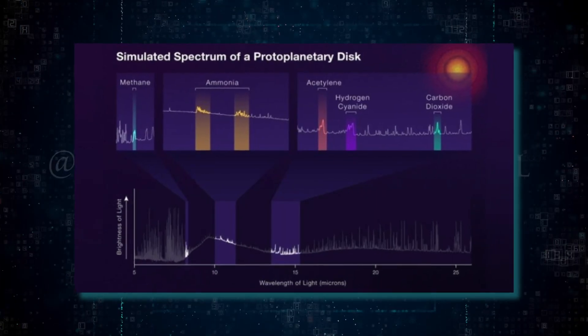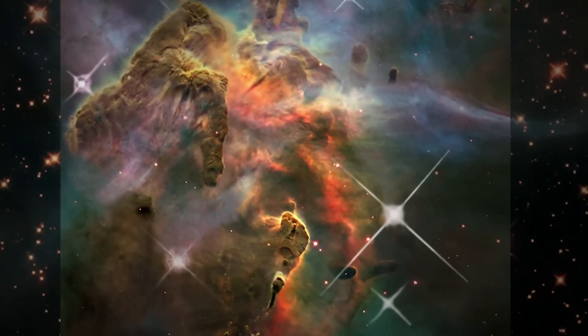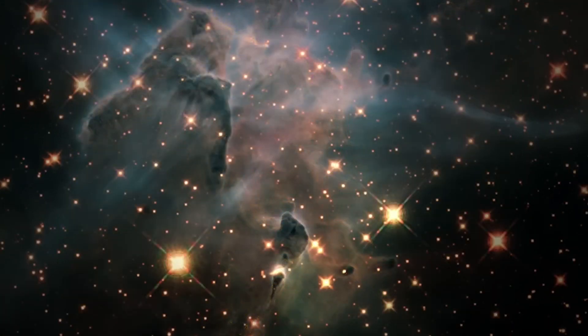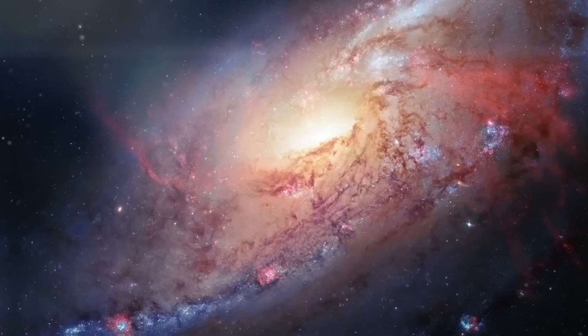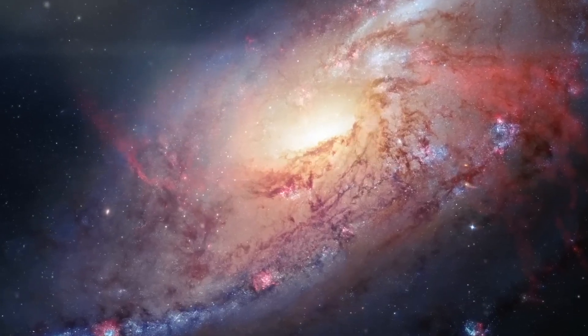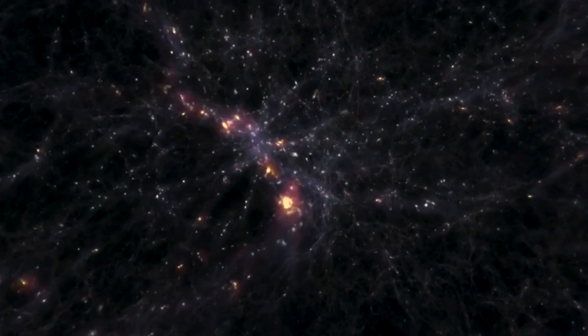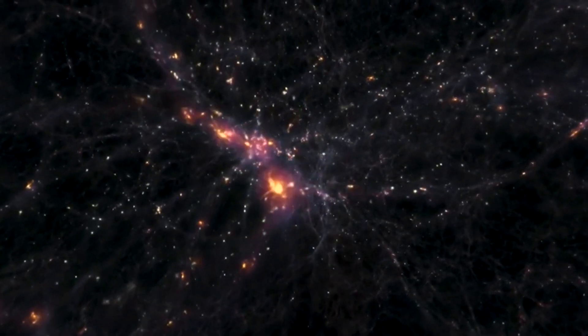MIRI allows us to see further along the infrared spectrum. And this in turn allows us to see through dust clouds and further back in time than ever before. That's because as galaxies move away from us, the color they emit shifts further into the infrared. So the longer the wavelength we can observe, the further back in time we can see.